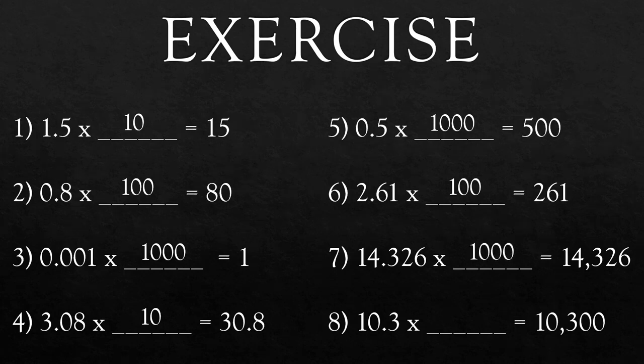Question 8: 10.3 × ___ = 10,300. How many places will you shift in 10.3 to get 10,300? 3. So what will you multiply? Yes, the answer is 1000.